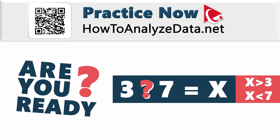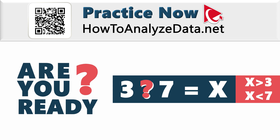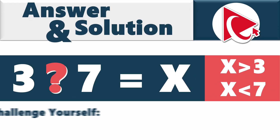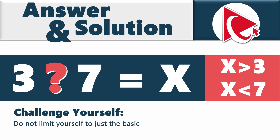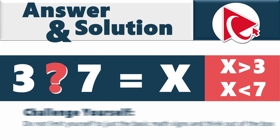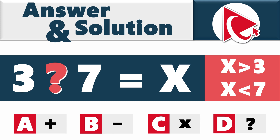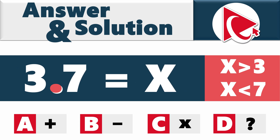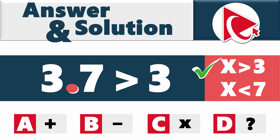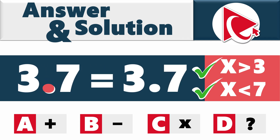Here's a hint: don't limit yourself to basic math signs — think outside the box. The choices are: A — plus sign, B — minus sign, C — multiplication sign, and D — a decimal point. None of the basic arithmetic signs solve this. The hero here is the decimal point: it slides between 3 and 7, turning them into 3.7. Since 3.7 is greater than 3 and less than 7, the correct answer is the decimal point, giving 3.7.